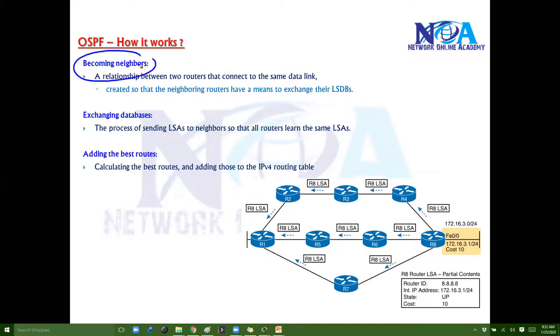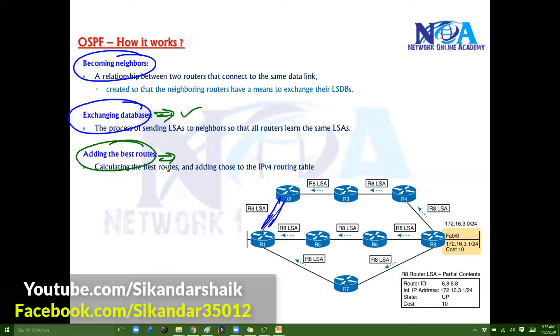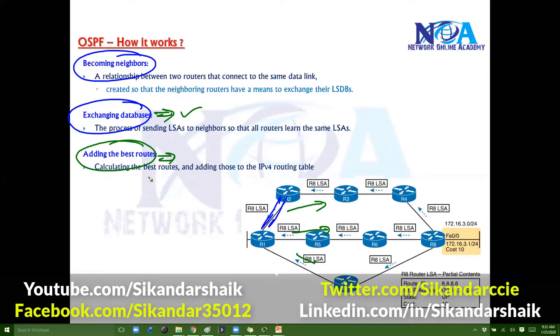Initially they must establish the neighbor relationship, and then they will exchange their own databases. Based on that database, they will figure out how many possible routes you have, how the network is connected, some information on that. Then finally they will figure out, okay, there are multiple paths. Which is the best route? Decide that best route, write down the best route in the routing table, and then forward the traffic.